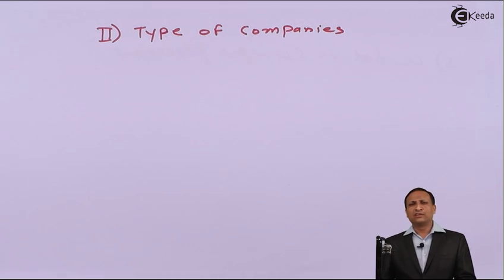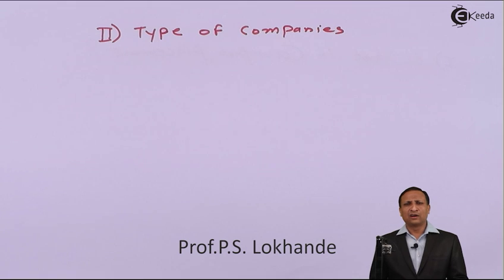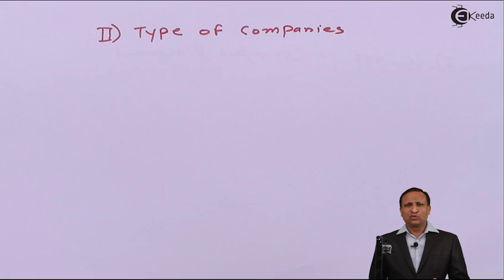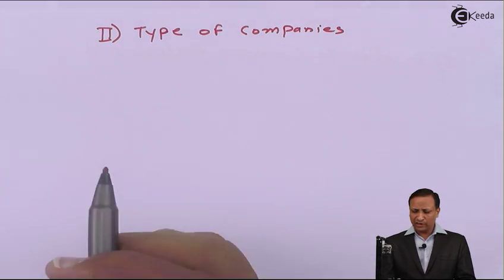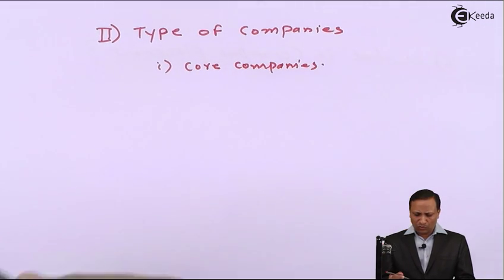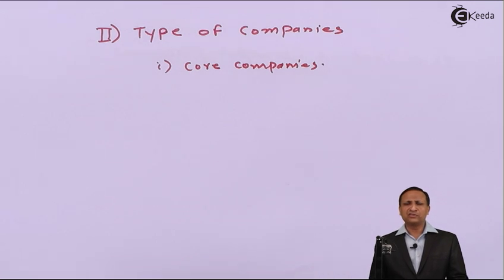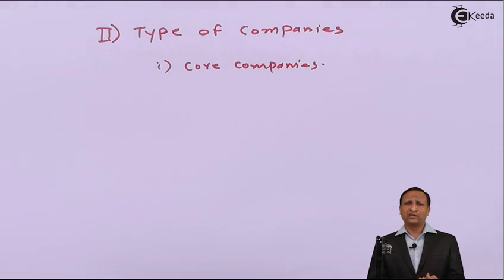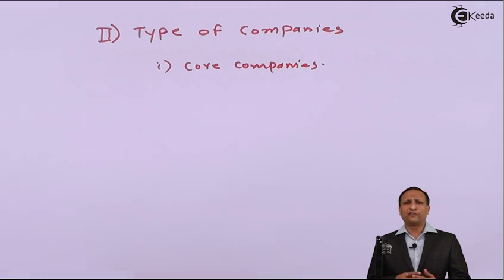Dear students, we are going to see what are the different types of companies, how they are categorized, and how they are identified in college campus placements. Whenever companies visit college campus placements, they have certain categories. The number one category is the core company. Core companies are those who want to recruit students from core branches — electrical engineering, civil engineering, mechanical engineering, and chemical engineering.